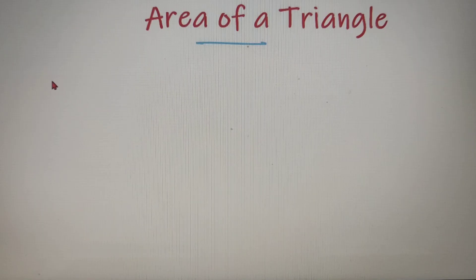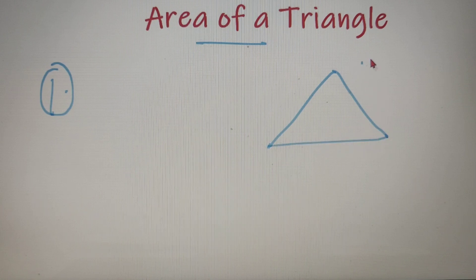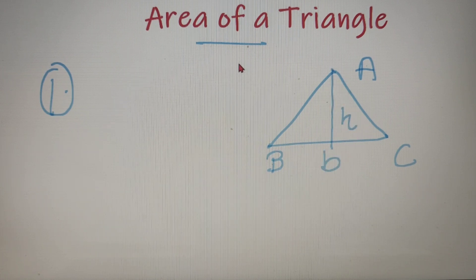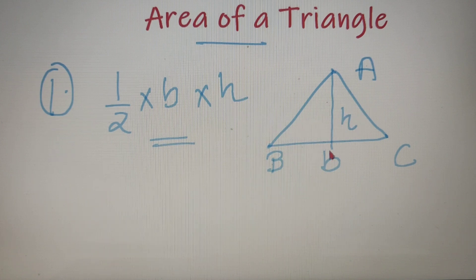In the first method we will use the formula in which the base and height of the triangle is required. So let's say we have a triangle and we can label it as A, B and C respectively, and the height of the triangle is H and the base of the triangle is B. Then according to the formula, the area of a triangle is equal to half into B into H. By this method, in which the base and height of the triangle is given, we can calculate the area of the given triangle.